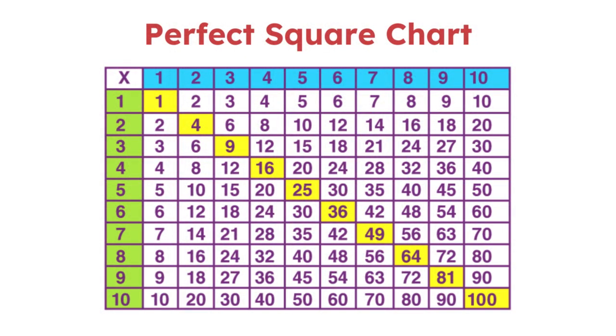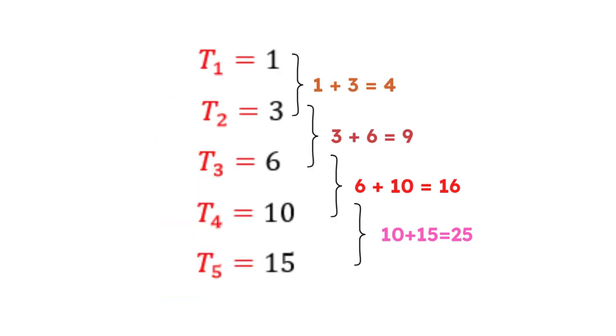Triangular numbers have some intriguing properties. For instance, the sum of two consecutive triangular numbers always forms a perfect square. Let's take T3 and T4, 6 and 10. Adding them together gives us 16 which is 4 squared, a perfect square.